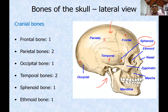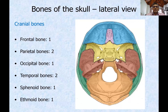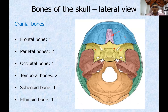Then the ethmoid bone — to see that you have to have an internal interior view. The sphenoid has two wings: a greater wing and a lesser wing. Then you have the ethmoid bone here. Even though this is large, it is taken as a single bone. You can see the other bones in this view: the frontal bone, occipital bone, the two parietal bones on either side, and the two temporal bones with its different parts like the petrous part and the squamous part.